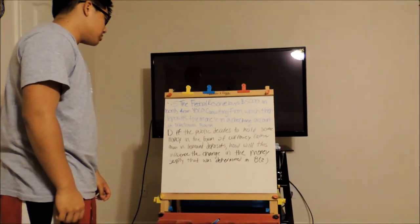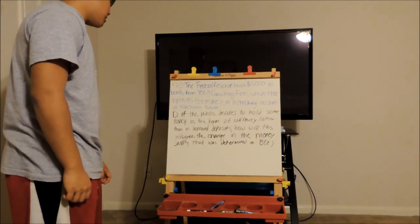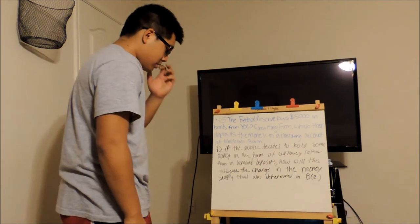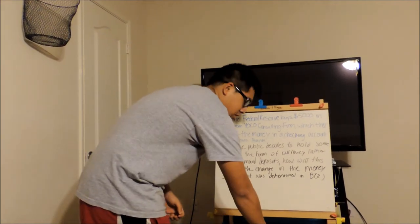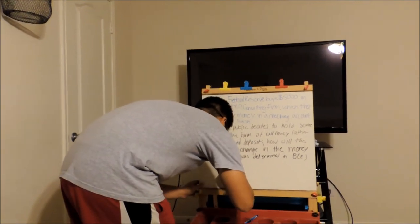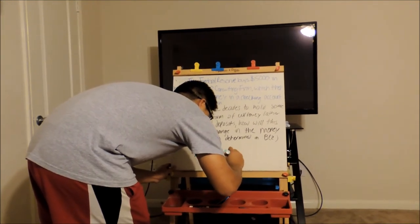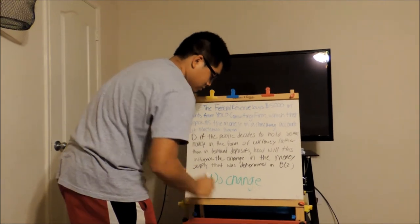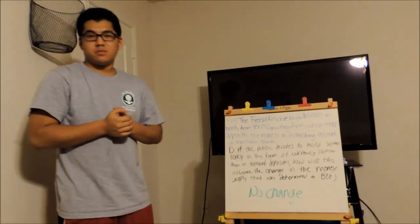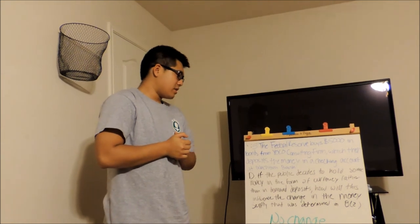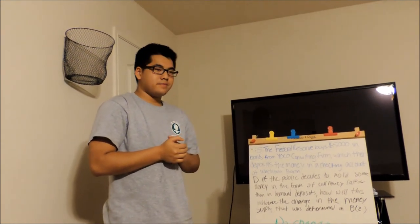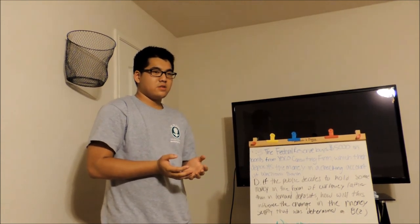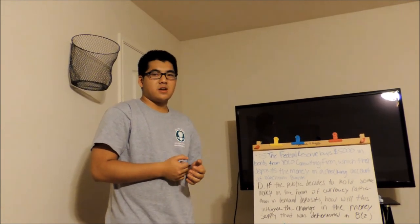If the public decides to hold some money in the form of currency rather than in demand deposits, how would this influence the change in the money supply that was determined in B2? There would be no change. The reason for that is because currency is already part of the money supply, and if it's not in the form of demand deposits, you can't loan out that reserve to create new loans. Therefore, the money supply cannot increase.